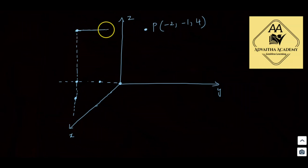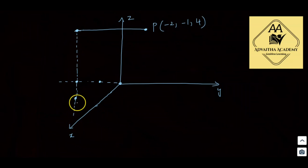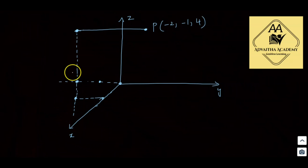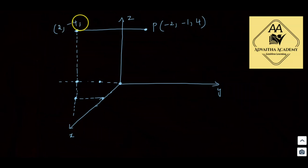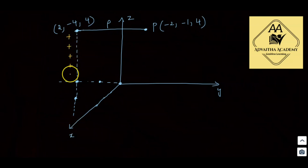From the point of interest we need to draw a perpendicular to the line charge. The perpendicular foot has z equal to 4 (same as the point of interest). The line charge is at x equal to 2, so the intersection point has coordinates x equal to 2, y equal to minus 4, and z equal to 4. This is where the line charge is located.